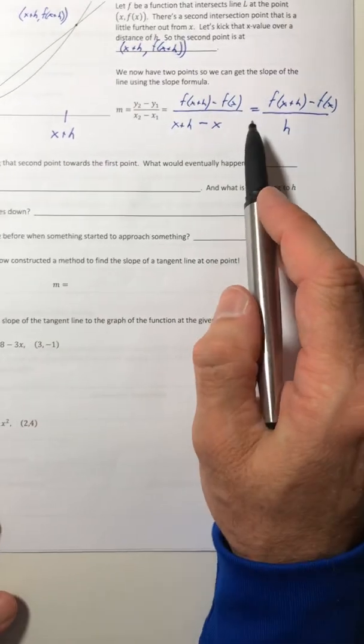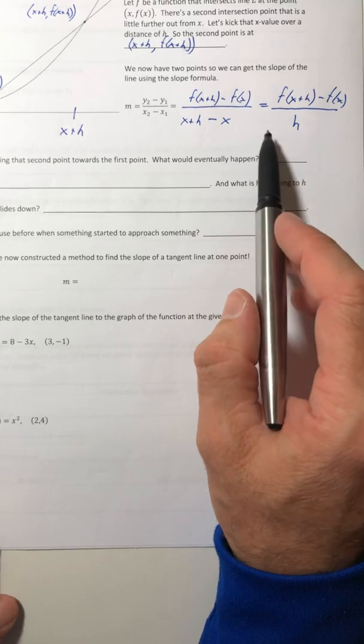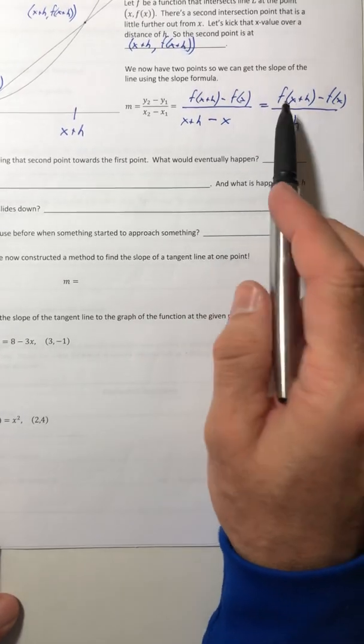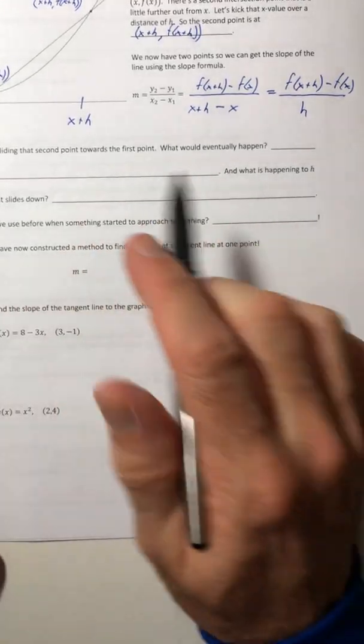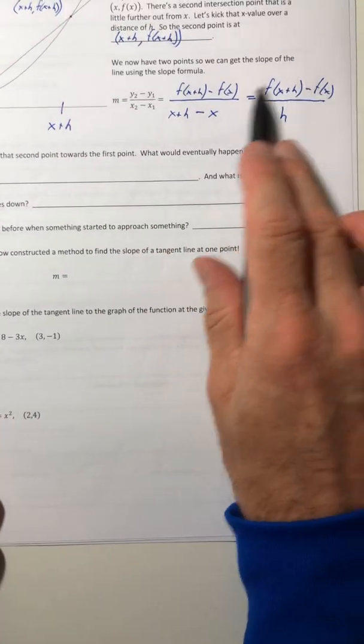Now, if you took pre-calculus or math 370 with me or another instructor, you have definitely seen this before. So, anyway, we'll come back to that. So, here's the slope of the line.